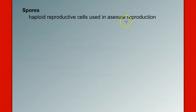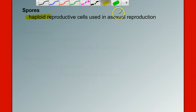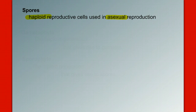And spores: spores are haploid reproductive cells used in asexual reproduction. Whereas gametes were haploid reproductive cells used in sexual reproduction, spores are used in asexual reproduction. We have to remember that spores are always haploid.